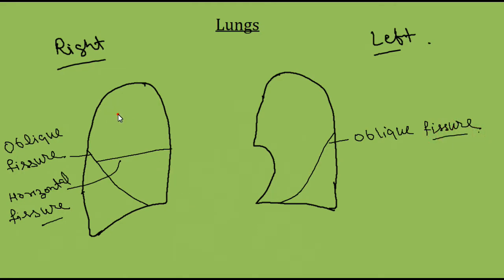On the right side we have the upper lobe, middle lobe, and the lower lobe. On the left side we have only two lobes, the upper and lower lobe.